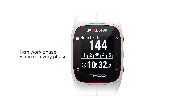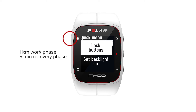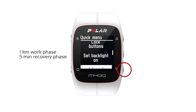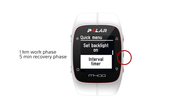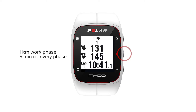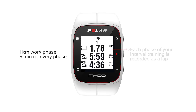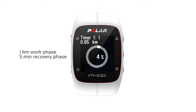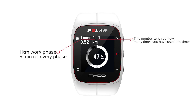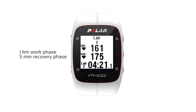And you start using it via the Quick Menu. This is how it will look like. Just like the Finish Time Estimator and Heart Rate Zones, the Interval Timer is also a training view in your M400 during training, and you can change it by pressing up or down.